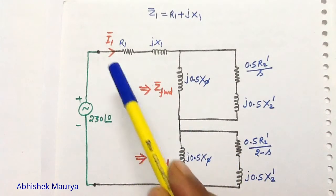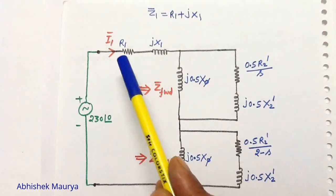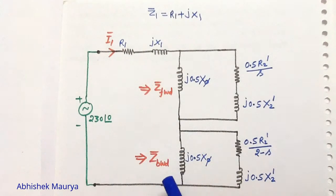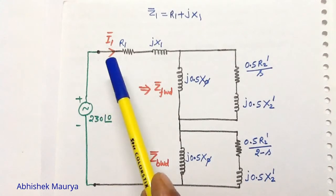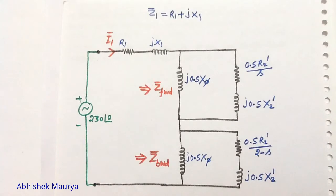Then we will calculate the total impedance, which is equal to Z1 plus Z forward plus Z backward, and we can easily find the input current, the input power factor, and the input power.